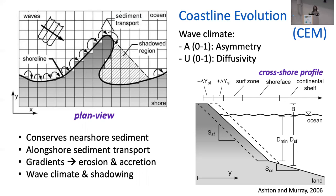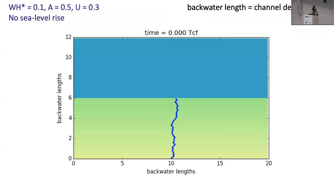I used the BMI to couple these things, and I also used the CSDMS cluster BEACH — which is sad to say is no longer with us — to perform a bunch of parameter studies to look at how changes in U, sea level rise rate, and wave height affected both the delta morphologies and the avulsion dynamics. Before jumping into those results, I want to show you a few videos to give you a sense of how the model evolves over time.